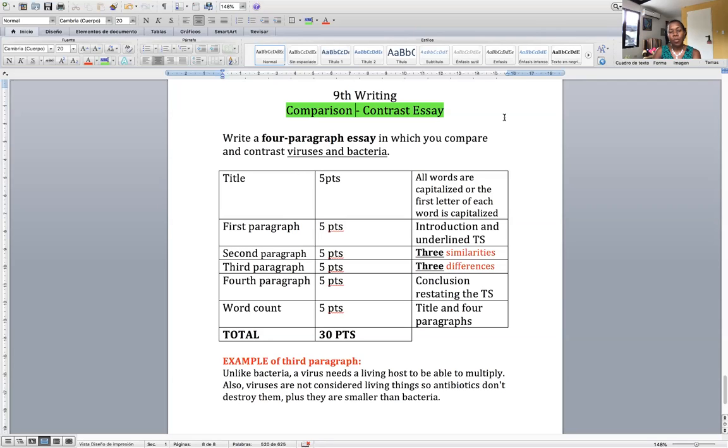In your fourth paragraph you need to give me the conclusion, so you can start with the words 'in conclusion' and then you restate the thesis statement. Remember that's very important, restating the thesis statement. Then five more points for your word count. The word count needs to include the paragraphs and the title, and this assignment is worth 30 points.